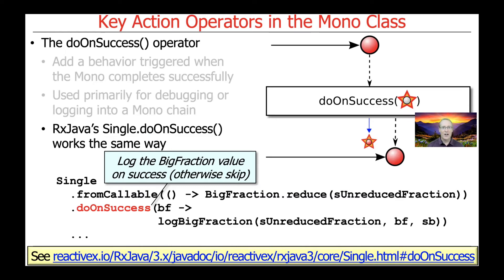One thing worth noting is that if something were to go wrong — say there was some kind of arithmetic error or an exception was thrown when we did the fromCallable to reduce the big fraction — then doOnSuccess would not be called. As the name implies, this consumer side effect that we've registered will not be invoked if something goes wrong and the mono does not emit successfully.